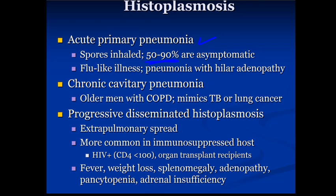One thing unique about histo compared to other fungal infections like blasto or cocci is that you'll see enlargement of the mediastinal and hilar lymph nodes — that can be a clue if the patient has significant risk factors. The individuals who go on to develop pneumonia more often have some immunocompromised status, like transplant patients or those with HIV. You can also see it in patients with significant lung dysfunction, COPD, or patients on glucocorticoids, since glucocorticoids create an immunosuppressed situation.